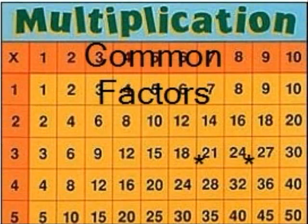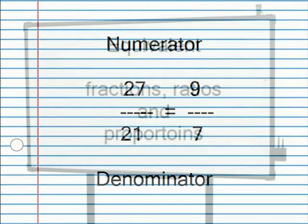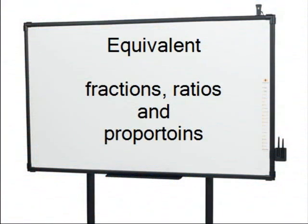If we look at the multiplication table, we can see that the common factor of 27 and 21 is 3. This means that if we reduce the ratio to simplest form by dividing the numerator and denominator by 3, then the equivalent ratio will then be 9 to 7. Using our knowledge of equivalent fractions, ratios, and proportions, we can now solve the values that are missing in problems where comparisons are made.